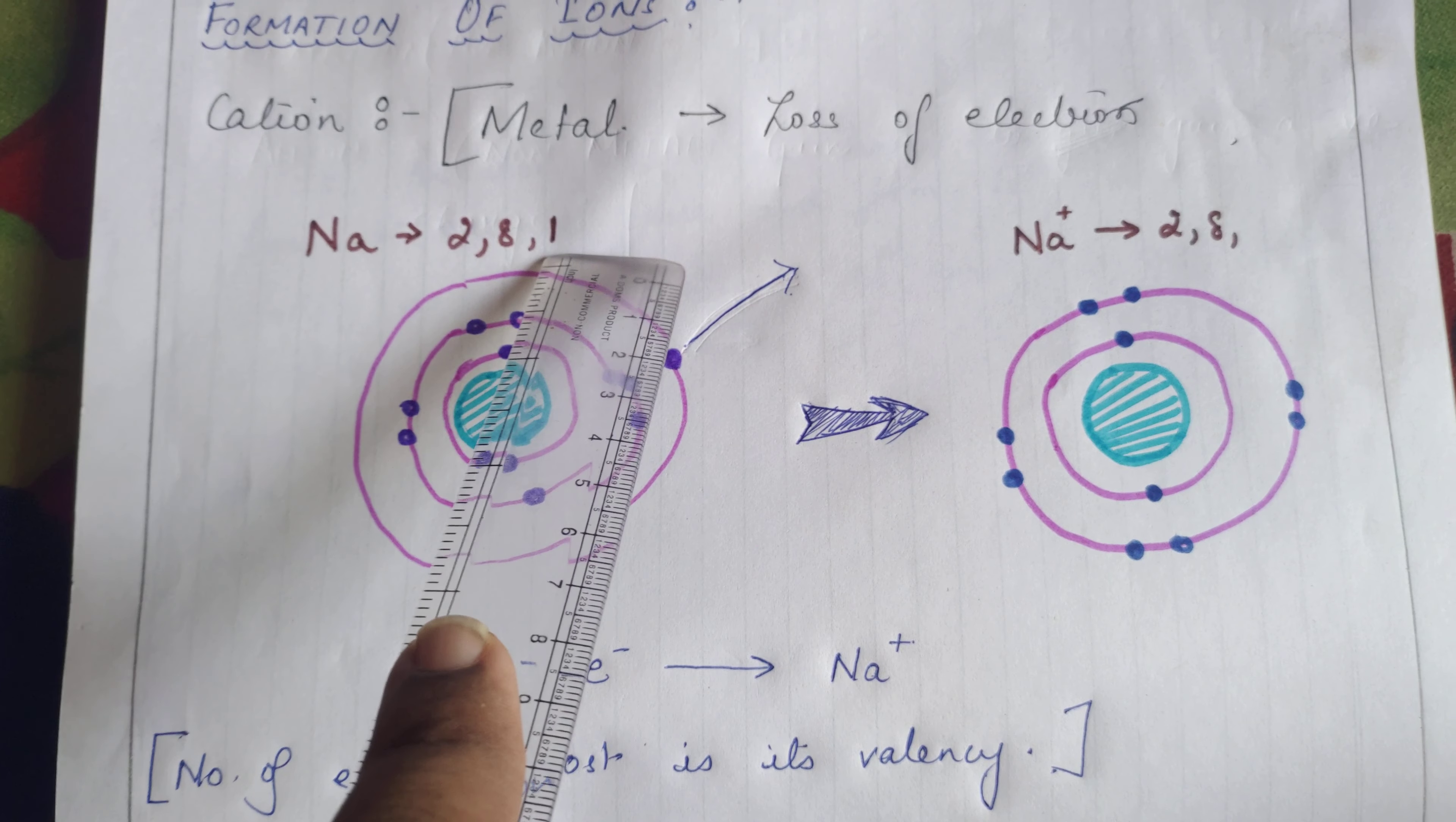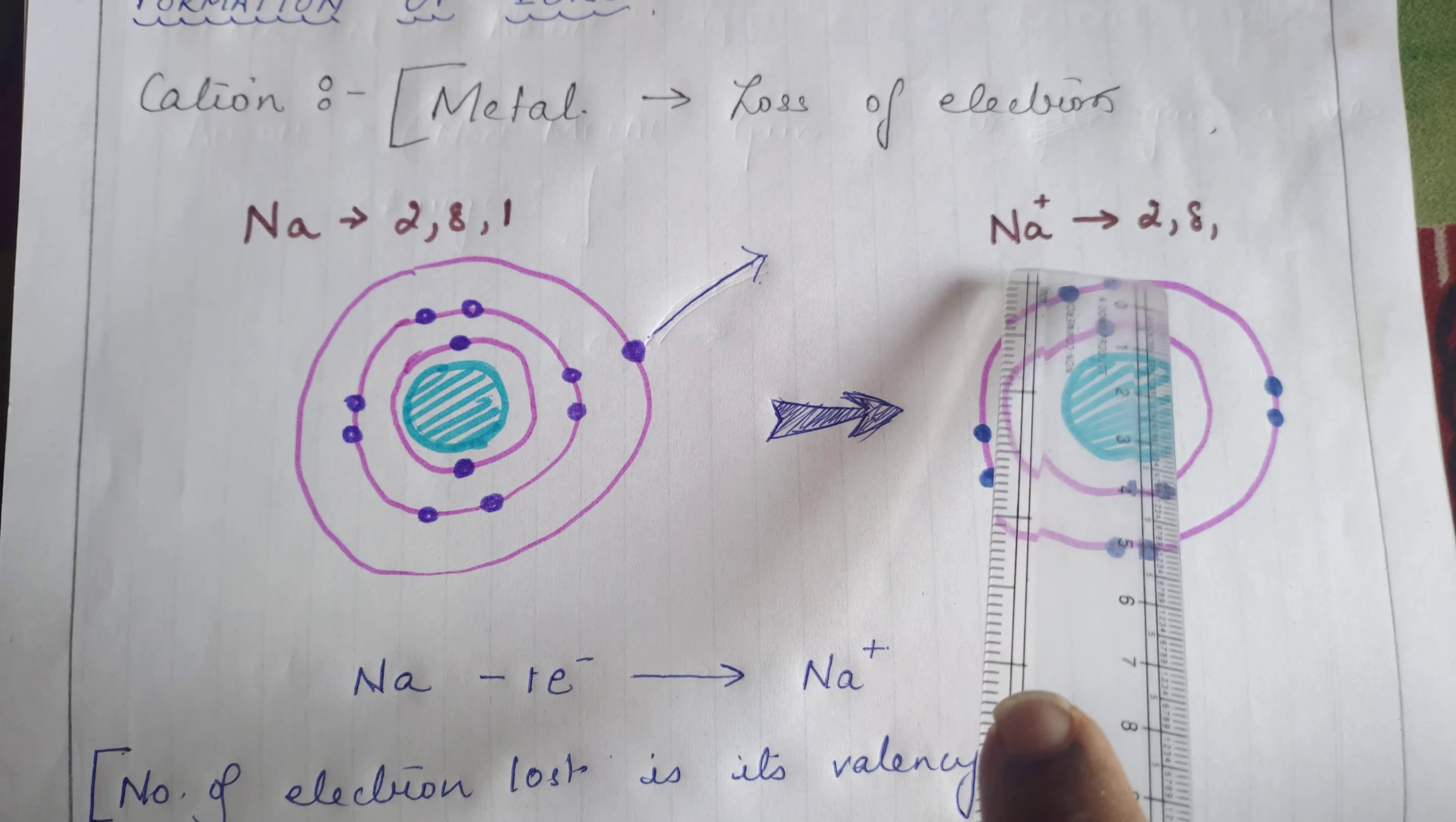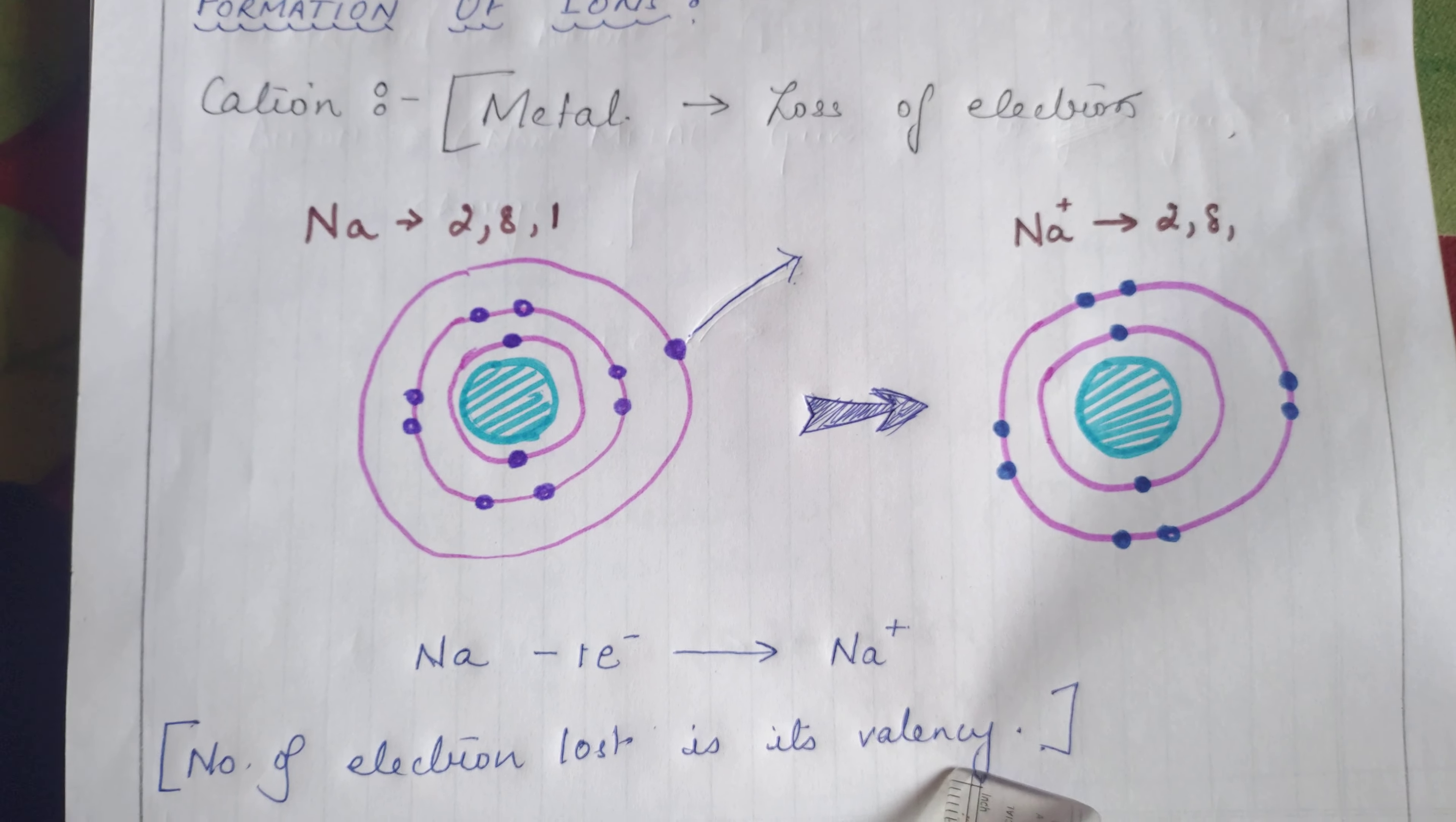Here's an example: the metal sodium. You can see the electronic configuration given over here, 2,8,1, means one atom of sodium contains one valence electron. When it loses that one valence electron, it gains a positive charge and forms Na+. So Na, on losing one electron, will form Na+. The number of electrons lost by an atom is called its valency.